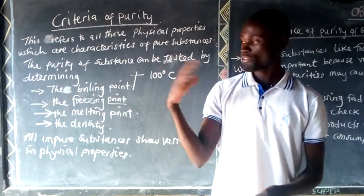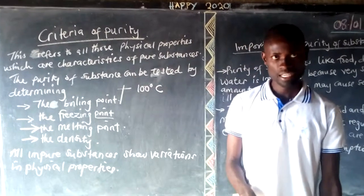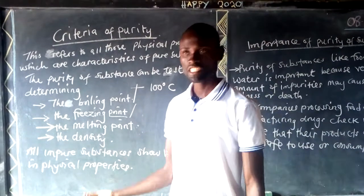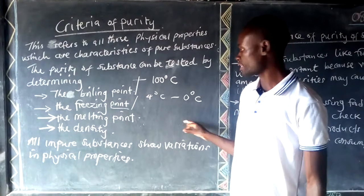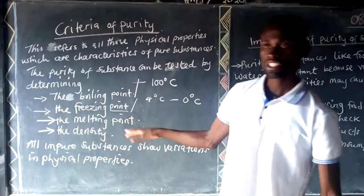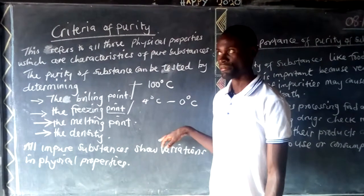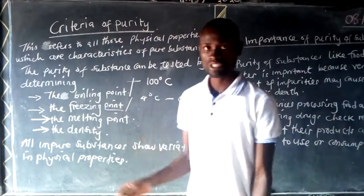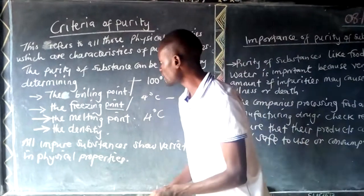The freezing point is the temperature at which a substance changes from liquid to a solid. The freezing point of water ranges from four degrees Celsius to zero degrees Celsius. The melting point is the temperature at which a substance changes from solid to liquid. The melting point of water is four degrees Celsius.